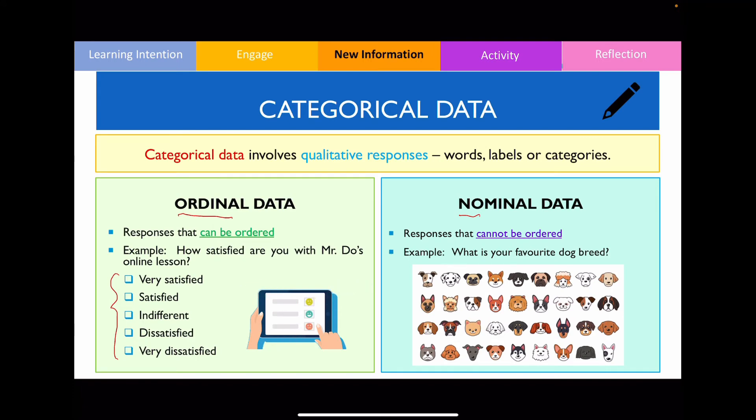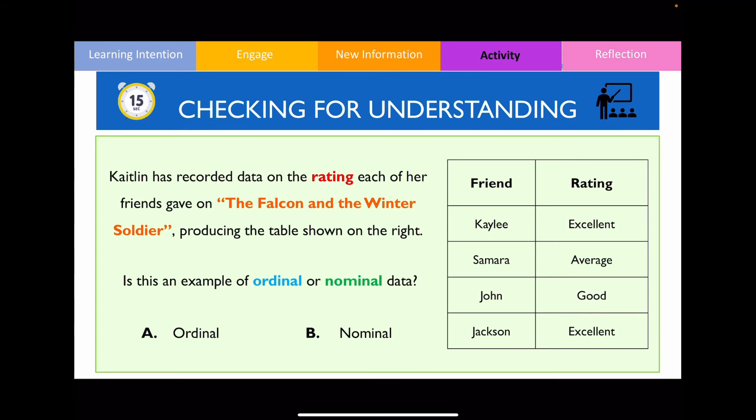Have a go to see whether you can identify whether something is ordinal or nominal data. So have a go with this question. For this question, this is an example of ordinal data because based on these responses, I can place these worded responses from low to high, and as a result of that, this is an example of ordinal data because it can be ordered.